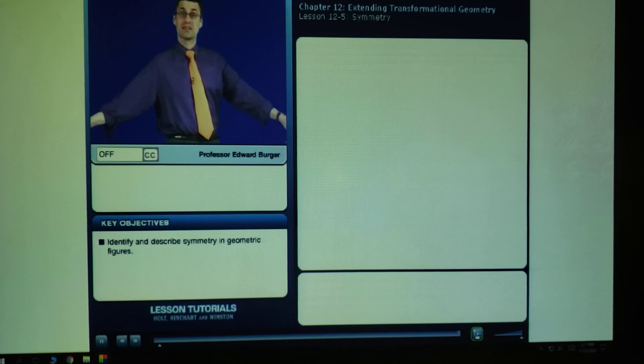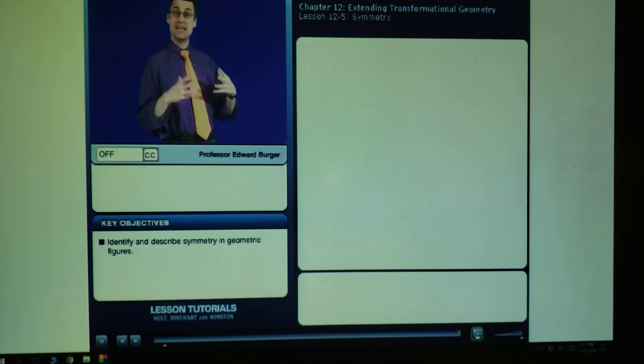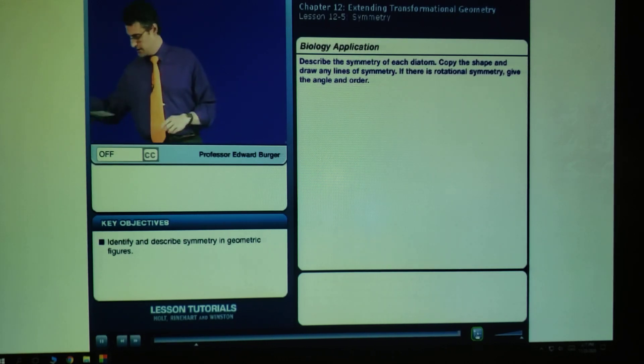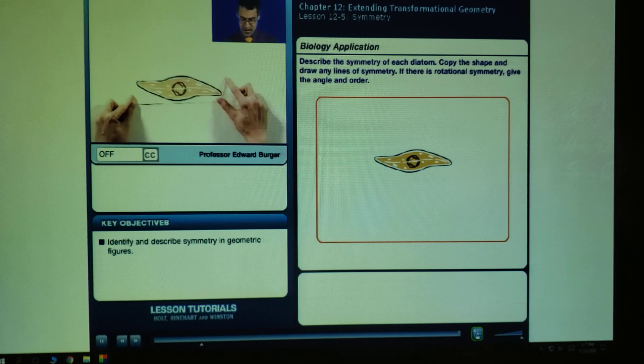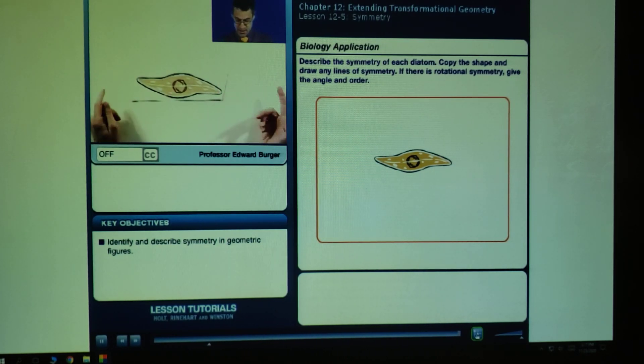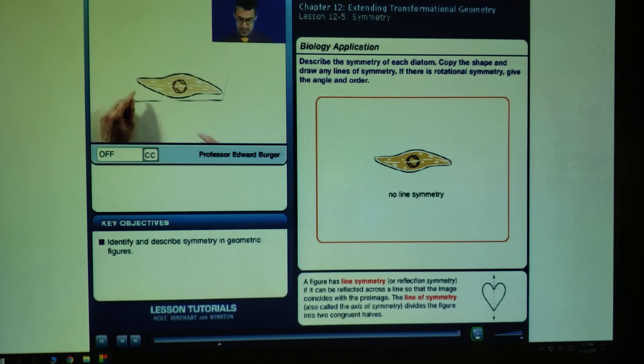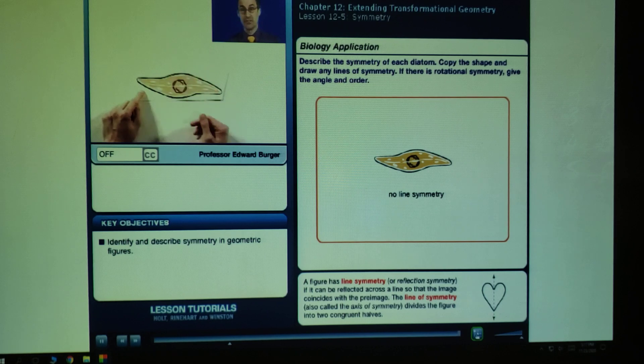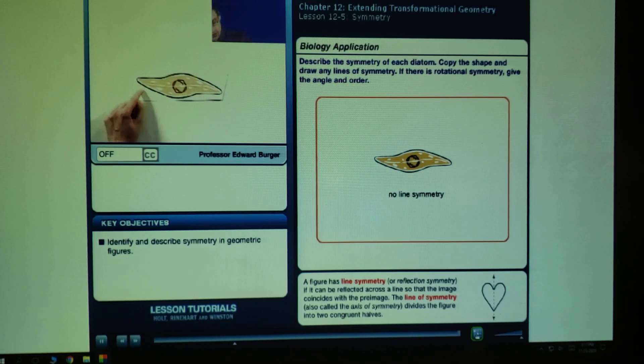Let's take a look at a real world application where we can see symmetry happening in nature. Let's describe the symmetry that we see in each diatom and draw any lines of symmetry. And if there is rotational symmetry, let's give the angle and the order of symmetry. So let's do the whole thing. Here's the first drawing.